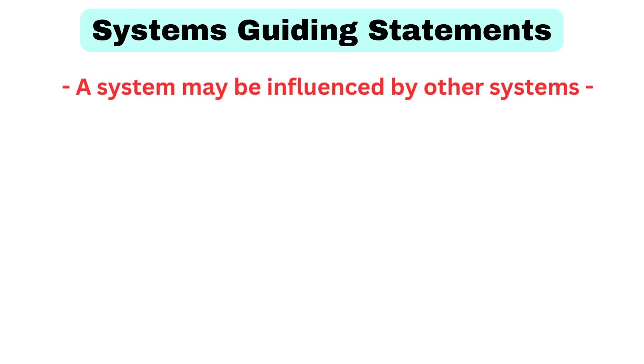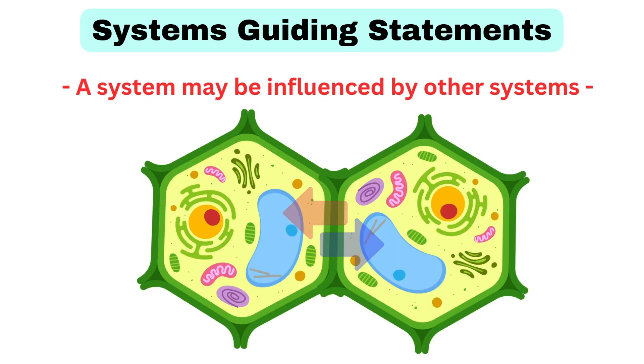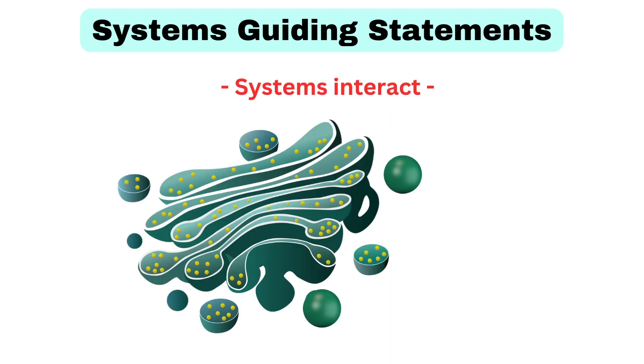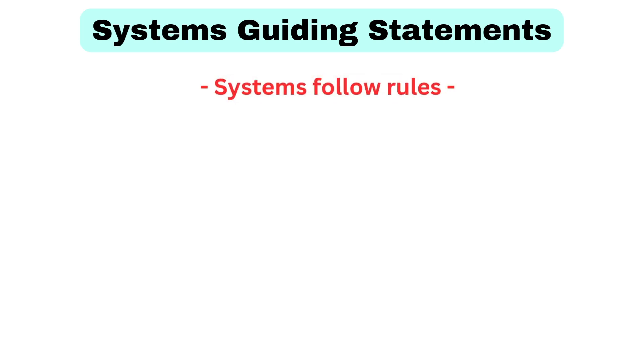A system may be influenced by other systems. Systems interact. Systems follow rules.